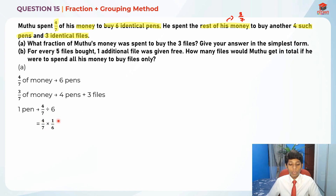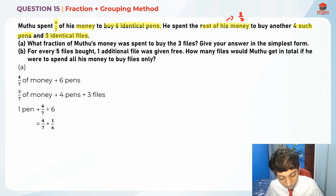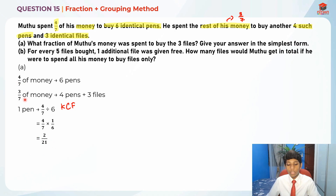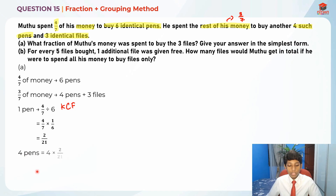When dividing fractions, we use KCF — keep, change, flip. We keep four-sevenths, change division to multiplication, and flip six-over-one to one-over-six. So four-sevenths times one-sixth gives us two-over-twenty-one. One pen equals two-over-twenty-one. Therefore, four pens cost four times two-over-twenty-one, which equals eight-over-twenty-one.